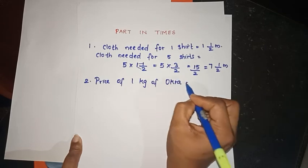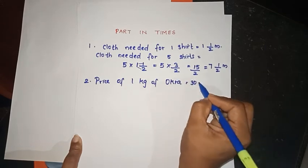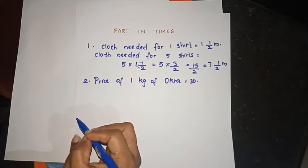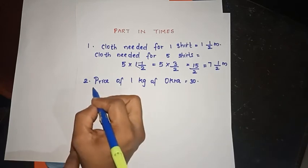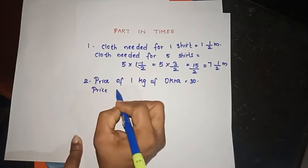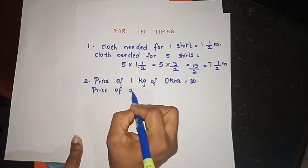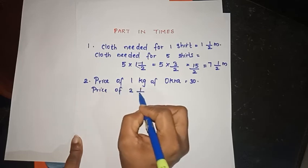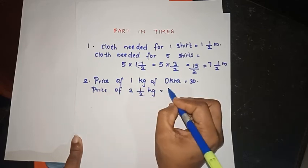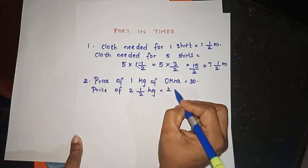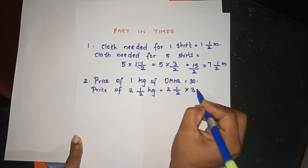So we have 30 rupees for 1 kg. Price of 2.5 kg — that is 2 and 1 by 2 into 30.